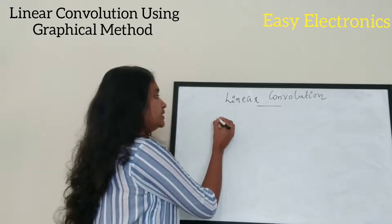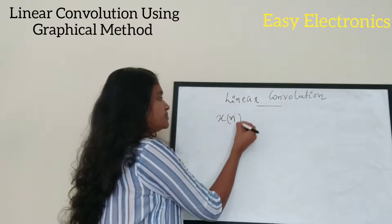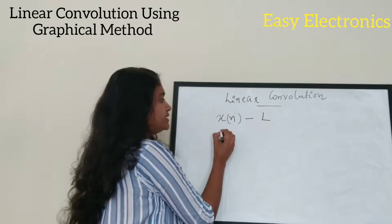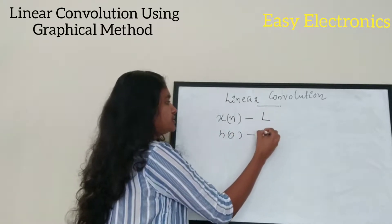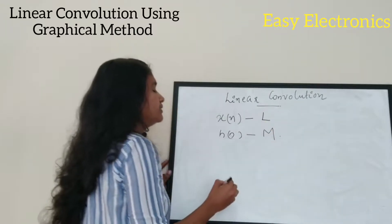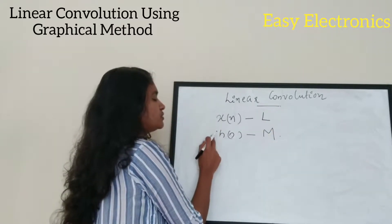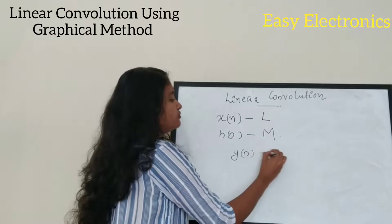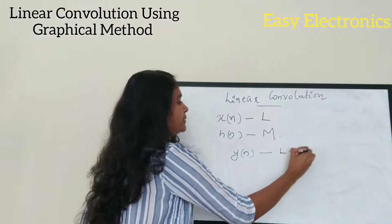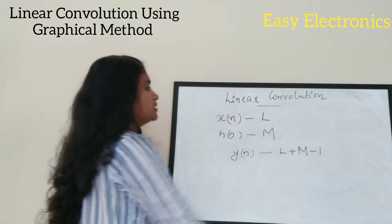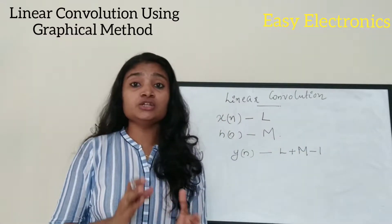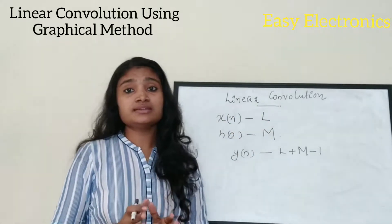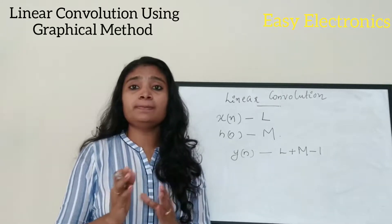I am going to take two sequences. x of m is my first sequence with length l, and h of n is my second sequence with length m. The linear convolution of these two will give a result y of n, and y of n will have a length equal to l plus m minus 1.